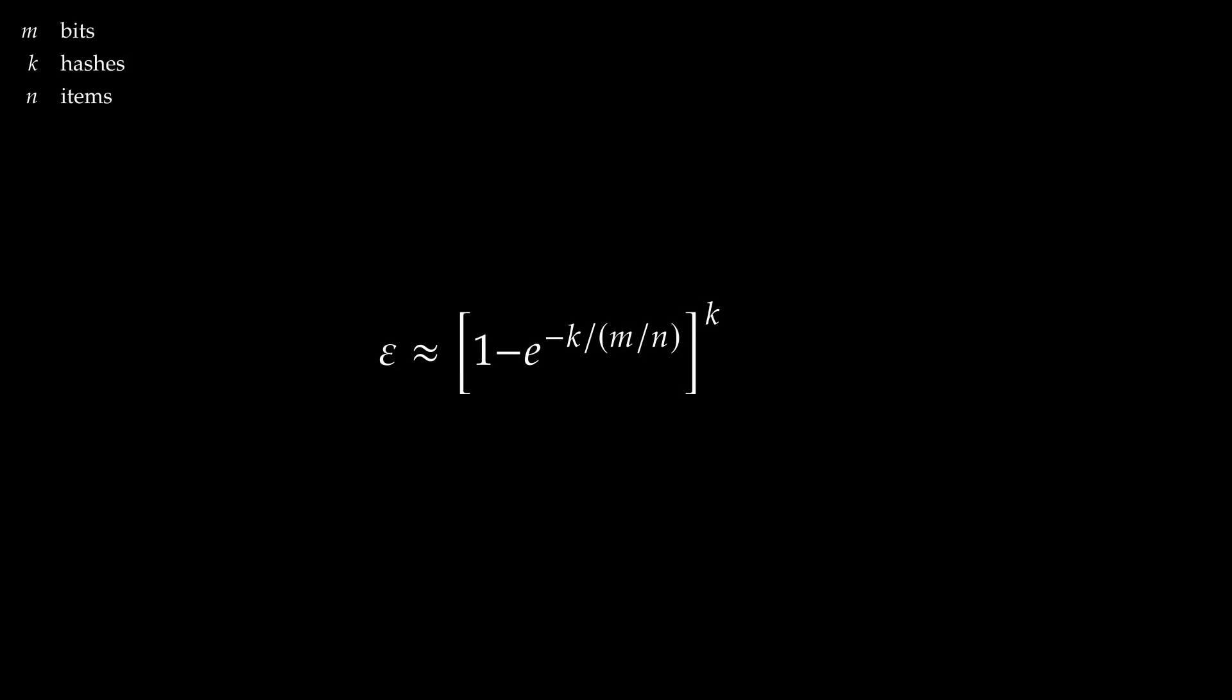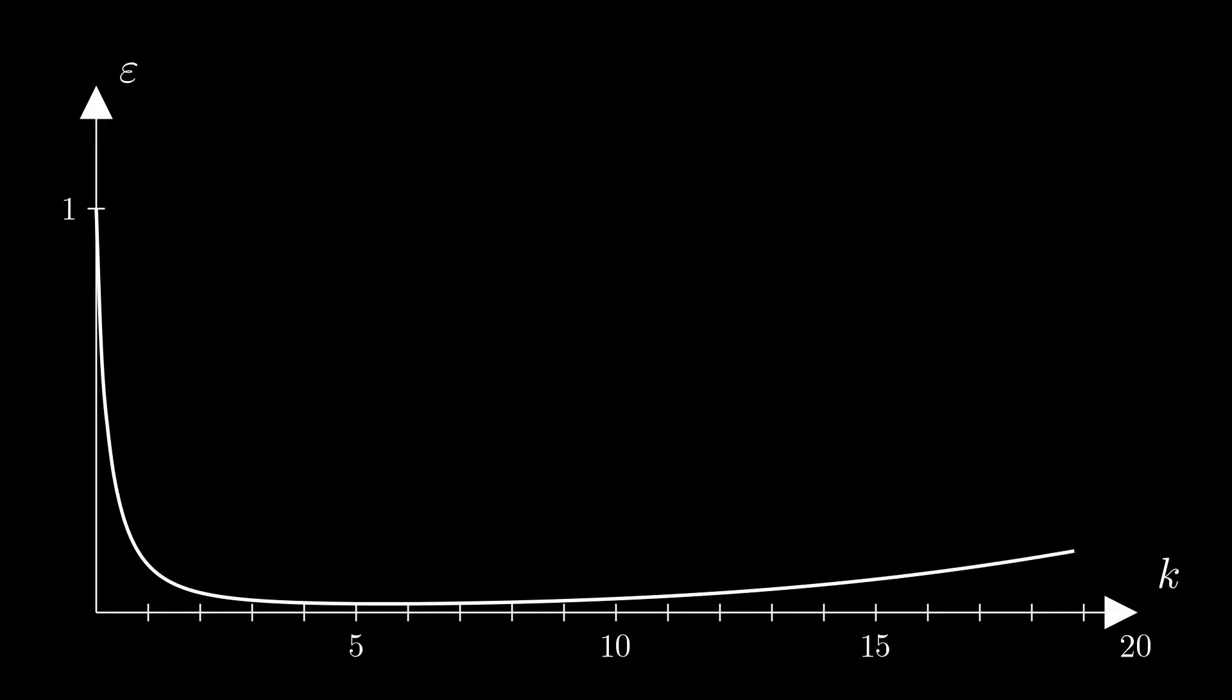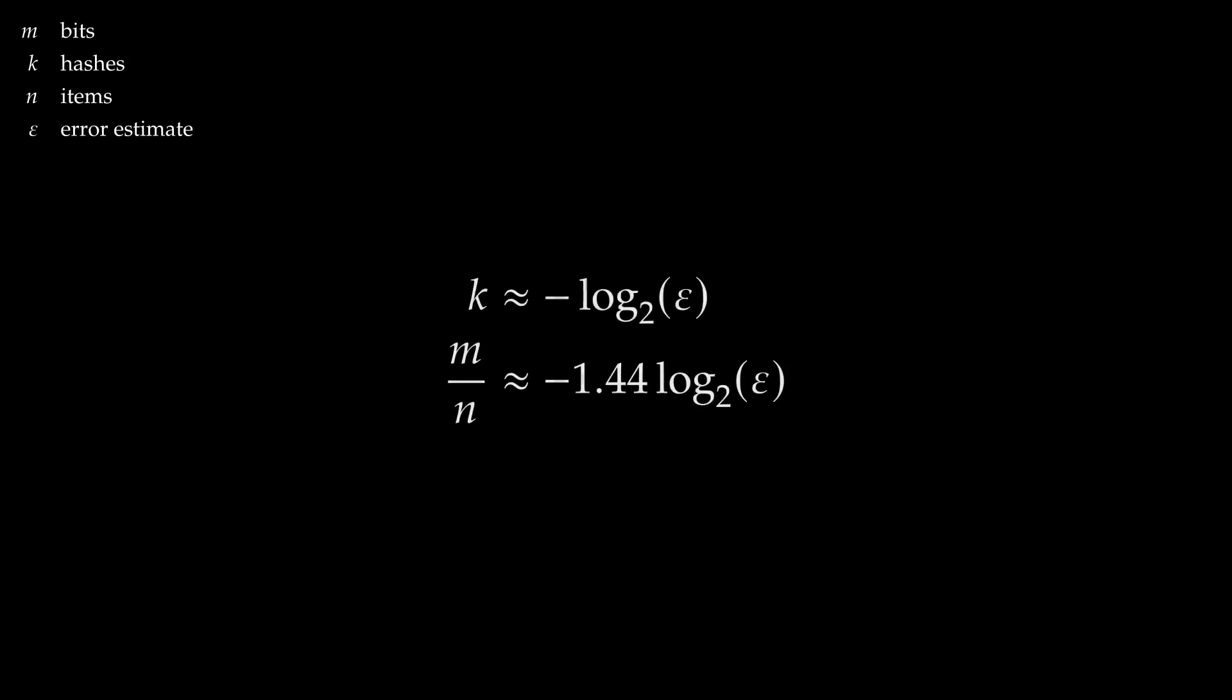Notice the quantity m over n is something meaningful to us. That's how many bits of storage we've allocated per element. If we fix that quantity to, say, 1 byte per element and plot, we see that we don't need a huge number of hash functions. In fact, the error rate is minimized using around 5 hash functions. More generally, using calculus, take derivatives set to 0, etc., you can show that we can achieve an error rate as small as we like by choosing the number of hash functions to be about log base 2 of the desired error rate, and the number of bits per element to be about 1.44 times that.